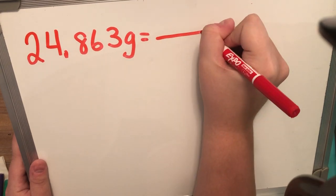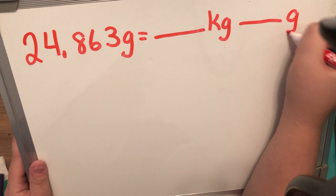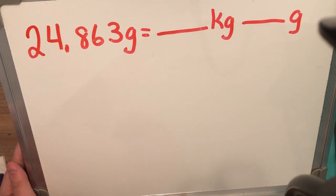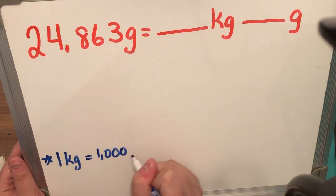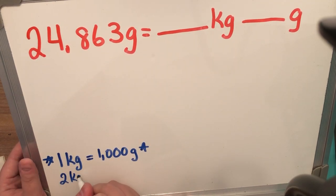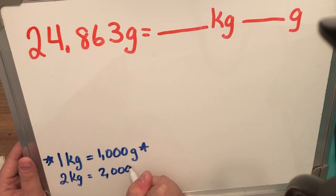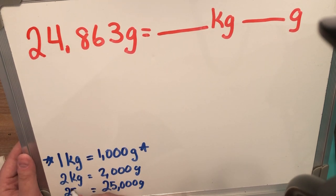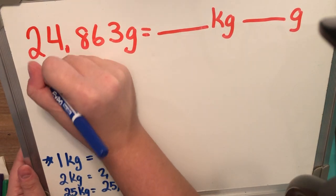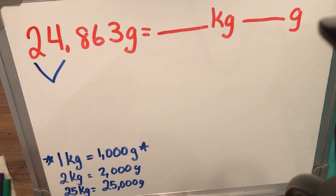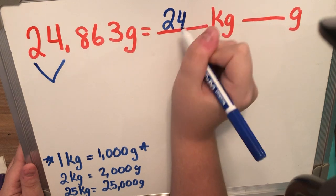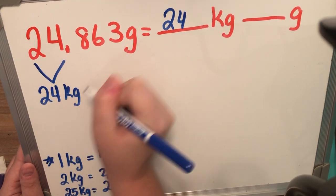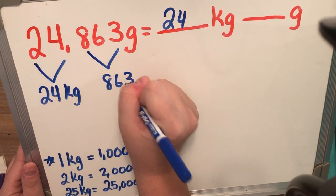Now, we're going to solve this a little differently. Because we want to figure out how many kilograms and grams are really in this problem. So, my golden ticket rule was that 1 kg is equal to 1,000 g. So, 2 kg should equal 2,000. So, using that information, I know that I can take this 24,863 grams. And really, there is 24 kg.